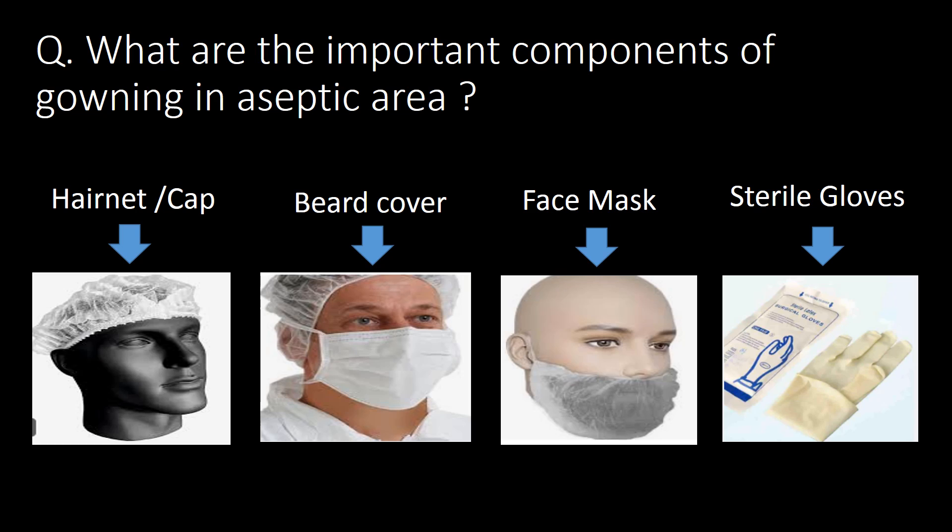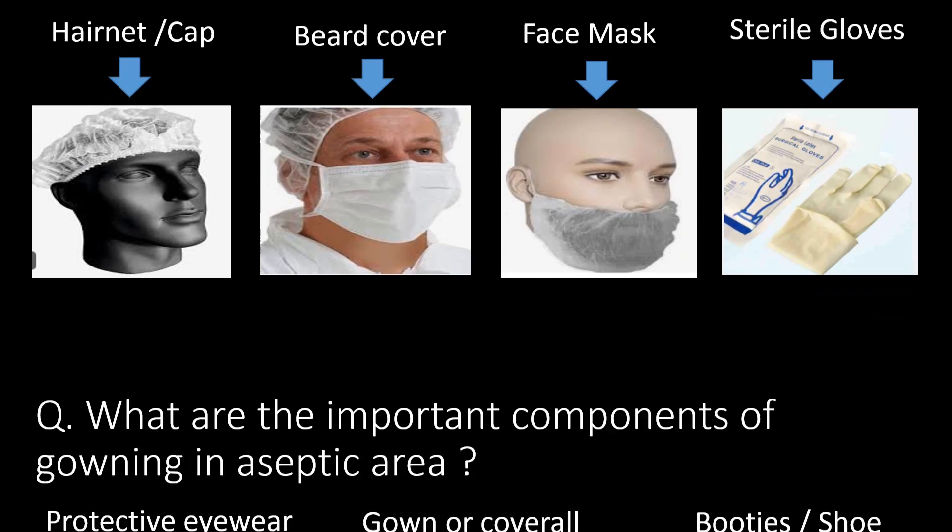What are the important components of gowning in aseptic areas? There are seven common important components of gowning in aseptic areas. The first four are: first, hairnet or cap; second, beard cover; third, face mask; and fourth, sterile clothes.